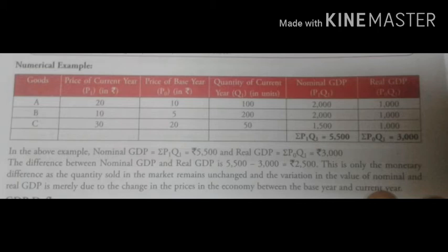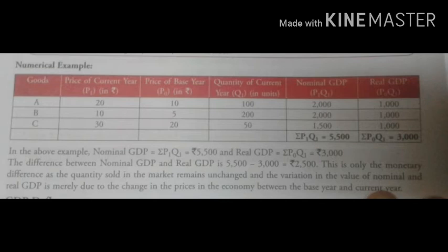First, we calculate nominal GDP using the formula P1 × Q1 — current year price × current year quantity. So: A: 20 × 10 = 200 (actually 2000); B: 10 × 200 = 2000; C: 30 × 50 = 1500. Summation P1Q1 = 5500. For real GDP, we use current year quantity × base year price: A: 100 × 10 = 1000; B: 200 × 5 = 1000; C: 50 × 20 = 1000. Summation P0Q1 = 3000.